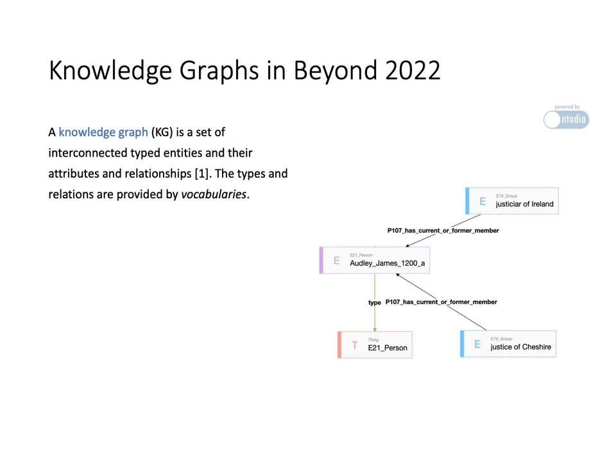The first group represents a group of people that held the office of Justicier of Ireland. The other group represents a group of people that held the office Justicier of Chessire.